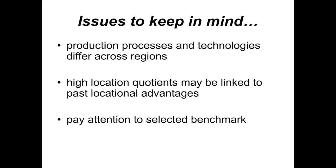High location quotients could reflect past locational advantages of a region that no longer apply today, meaning the region might not be receiving all the benefits of industry agglomeration. It's also important to pay attention to the selected benchmark. Although we normally use the entire US economy, you could use the state as a benchmark when calculating location quotients for cities or towns, which could very much affect interpretation. For example, Maine is practically covered by forests, and forest-related sectors have high location quotients in almost all Maine counties relative to the US. But if we use the state of Maine as the benchmark, forest sector location quotients will drop, because forestry's employment share is much higher in Maine than in the US as a whole.